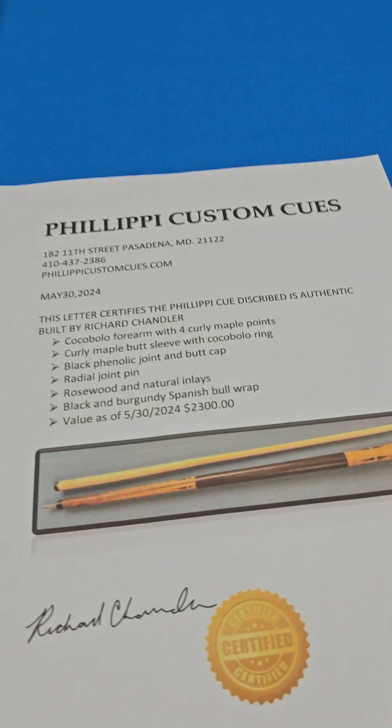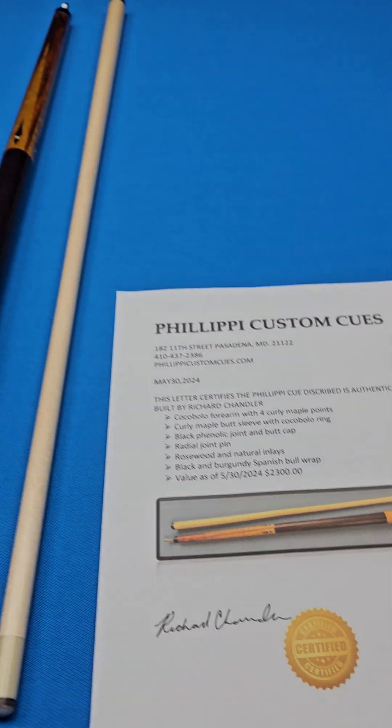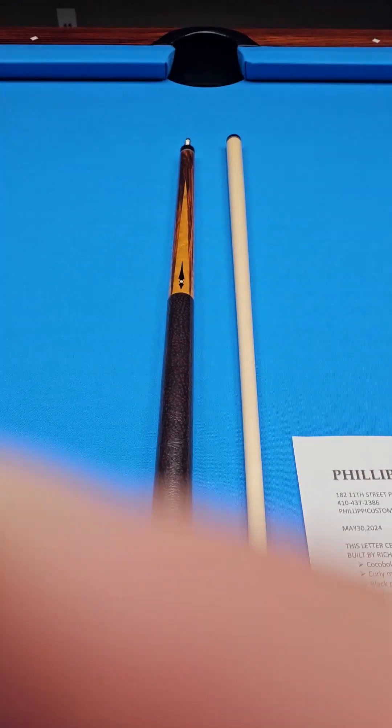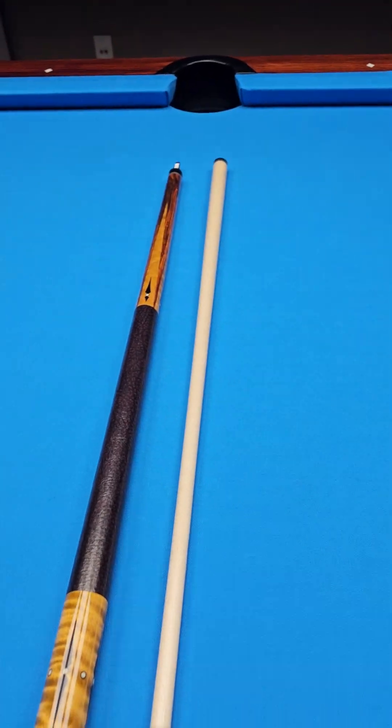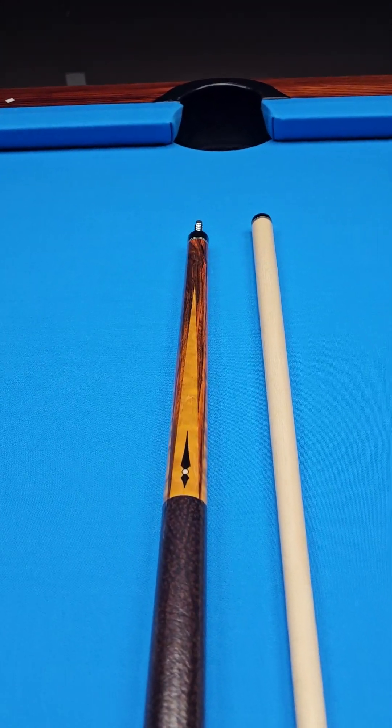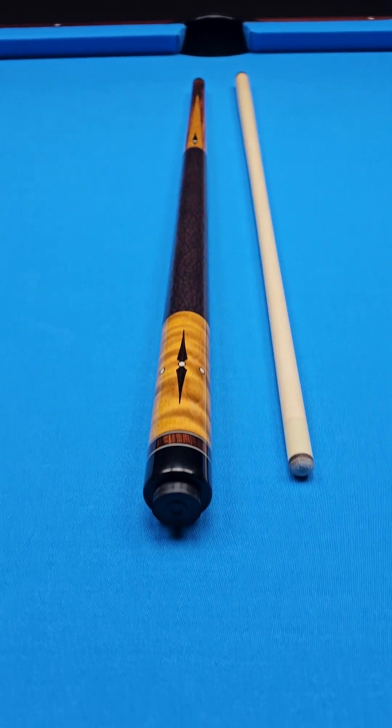This cue has a retail value of $2,300. If you wanted to order it custom from the shop, and you're definitely going to wait for a long time, you could buy it here from us. Rick gave us a discount. We're going to pass it on to you. We're going to do this cue under $2,000, under $2,000.